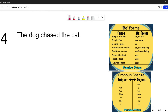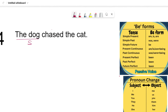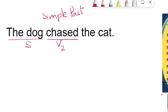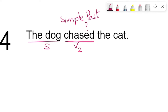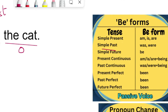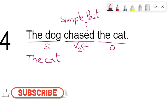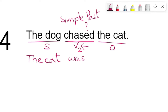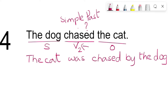Fourth sentence: 'The dog chased the cat.' The subject is 'the dog.' 'Chased' is the verb — it is verb 2, meaning this is simple past tense. The dog chased what? 'The cat' is the object. The object becomes the subject: 'the cat.' Since this is simple past tense, the B forms are 'was' or 'were.' 'Cat' is singular, so 'the cat was.' In passive voice we always use the third form — the third form of 'chased' is 'chased.' The passive form is: 'The cat was chased by the dog.'